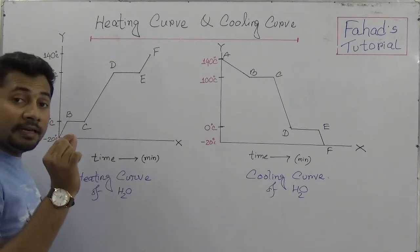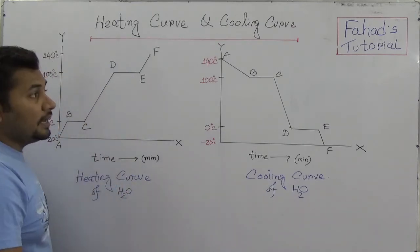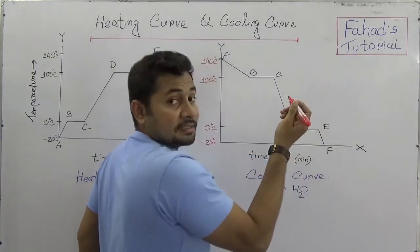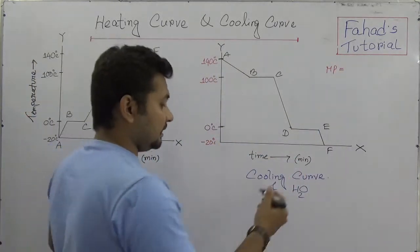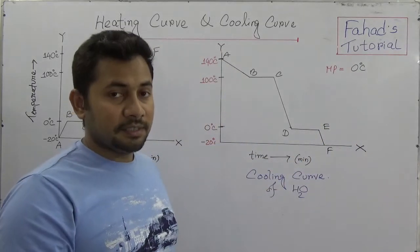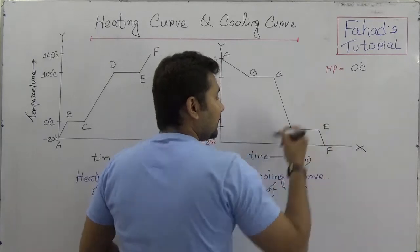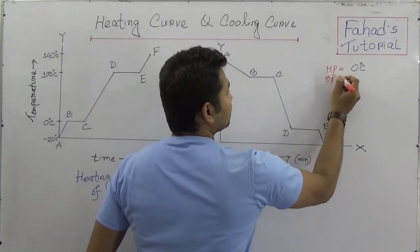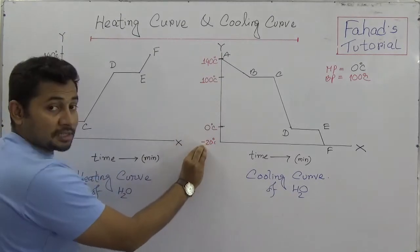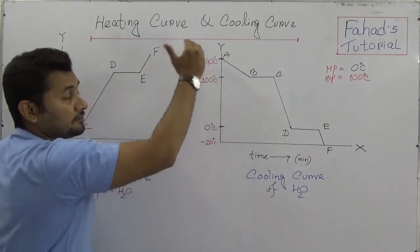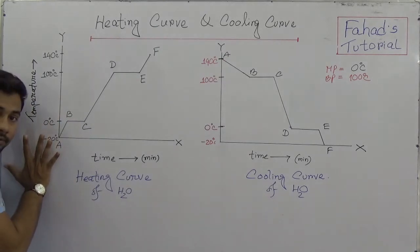It starts from minus 20 degree Celsius. Before explaining further, I need to say that in the case of water, the melting point of ice is 0 degree Celsius. The melting point is the temperature where a substance turns into liquid from the solid state. The boiling point of water is 100 degree Celsius. So on the heating curve, we have minus 20, 0, 100, and 140 — where 140 represents the gaseous state of water like vapor.